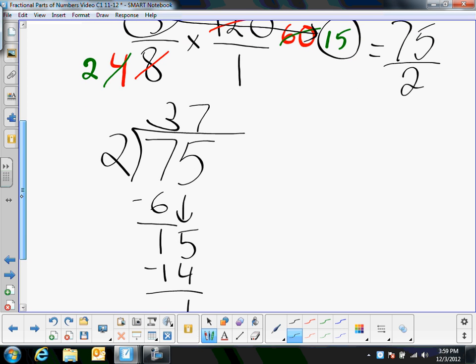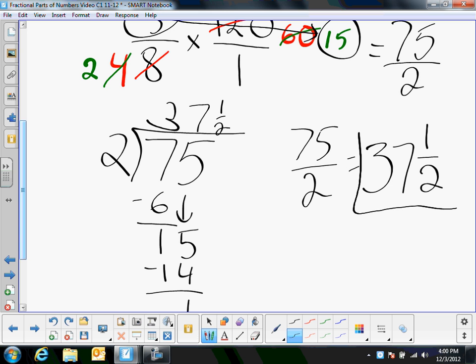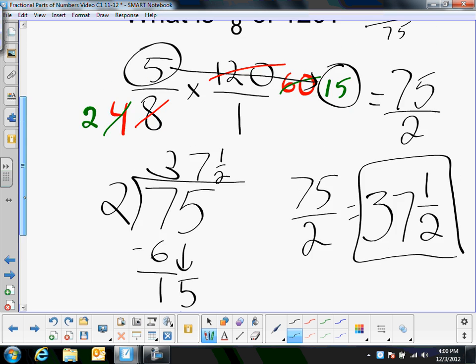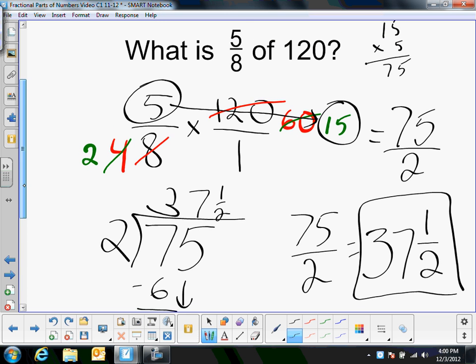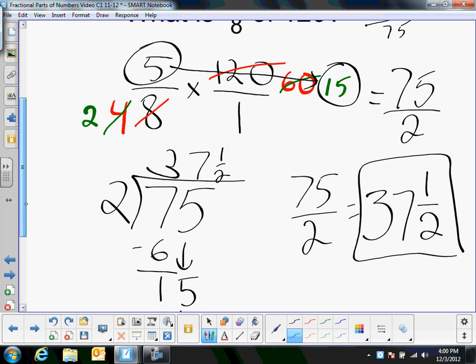So 75, if I look back again at 75 halves, that equals, I want to know how many times two goes into 75. The answer is 37. And then remember, our remainder is one. So really, it's 37 and a half. And so it doesn't even always work out to be a whole number, but you can see how five-eighths of 120 is 37 and a half.